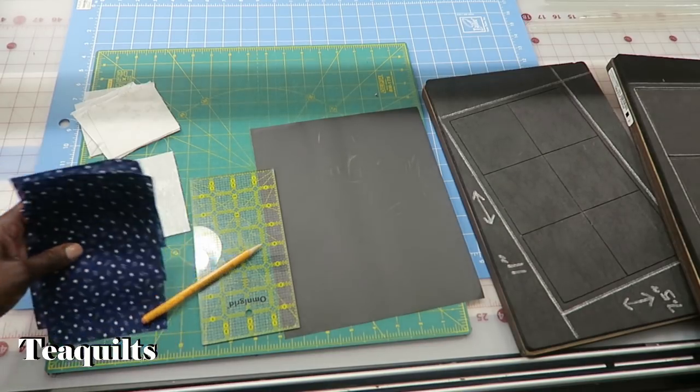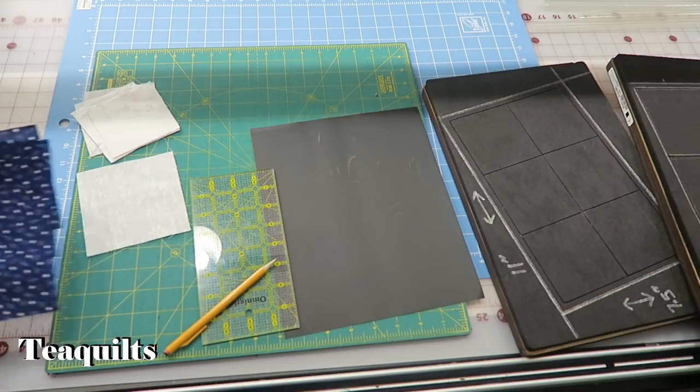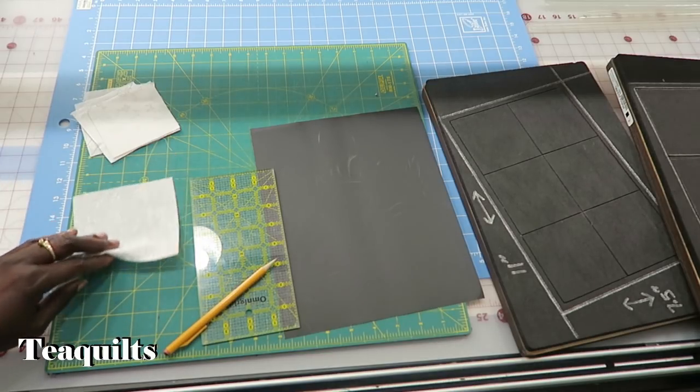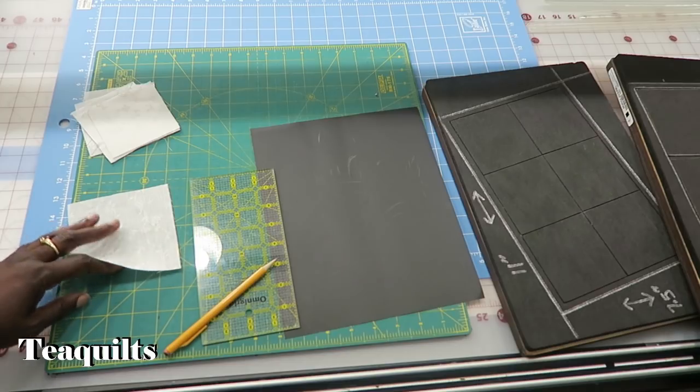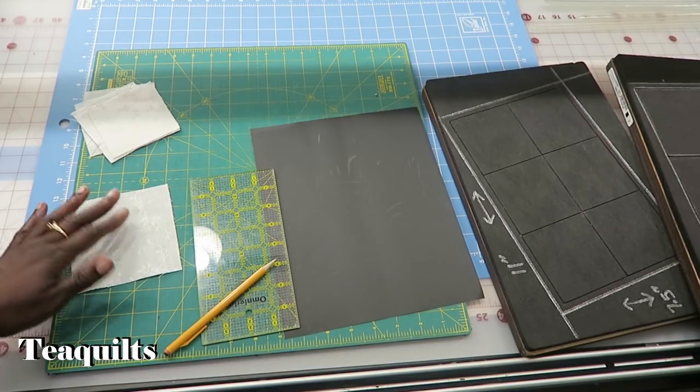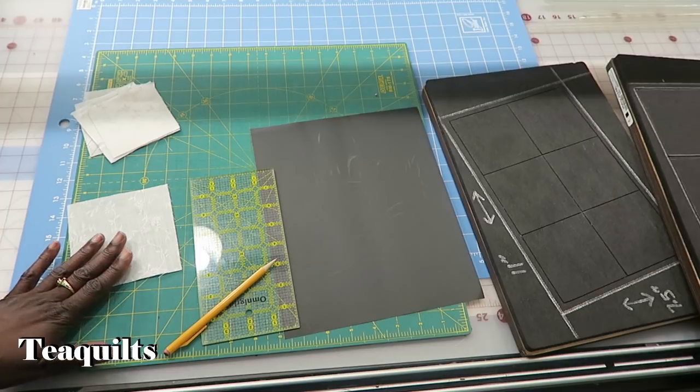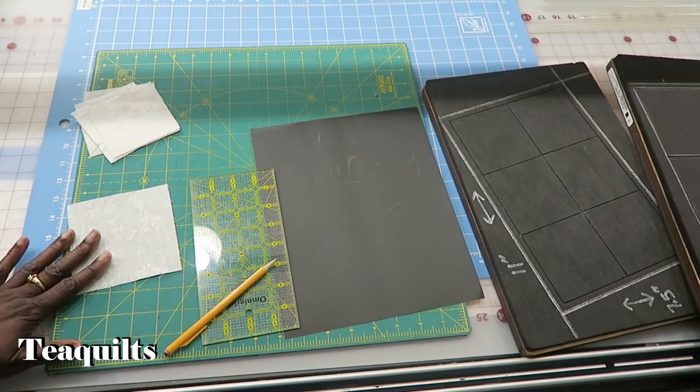That's the only thing I need cut from my print. Also, from my actual star print, which is going to be in the middle—the white is actually going to be the star—you need one four and a half inch square.